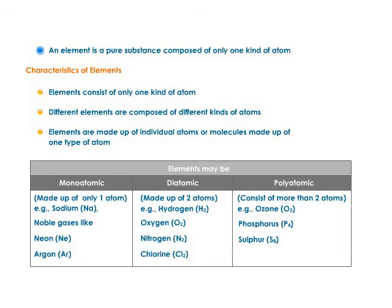Elements are pure substances containing only one kind of atom. There may be more than one atom in an element; when there is, it is called a molecule. Elements with only one atom are called monoatomic — for example, sodium and noble gases like neon and argon. Some elements like oxygen, nitrogen, and chlorine have two atoms in their molecule and are called diatomic.